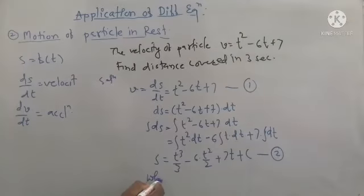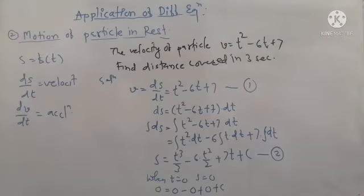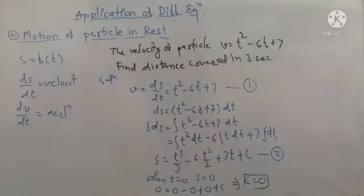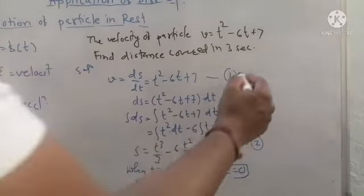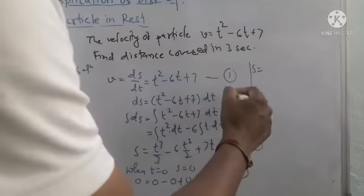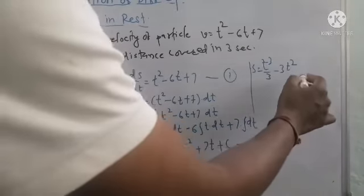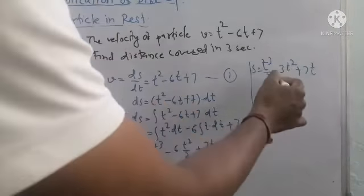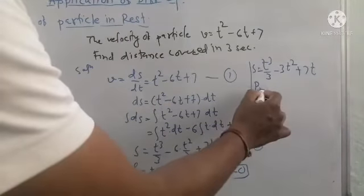This gives the equation of displacement in time. Since the particle starts from rest, at time t = 0 the displacement s = 0. Substituting t = 0 and s = 0, all terms become zero, so C = 0. The equation of displacement becomes s = t cubed by 3 minus 3t squared plus 7t.